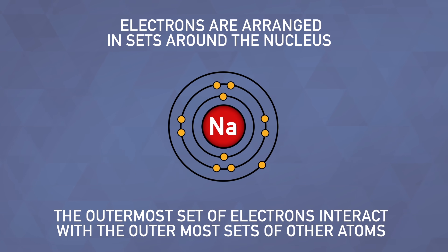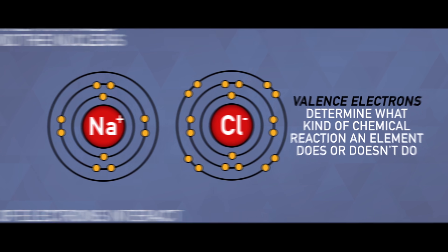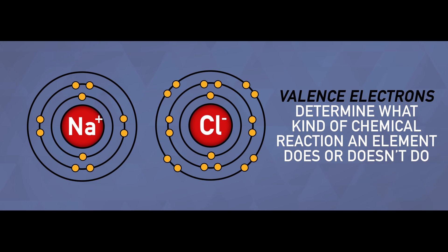Electrons within atoms are arranged in sets around the nucleus. The set of electrons that is furthest away from the nucleus is the one that interacts with the outermost sets of other atoms, and therefore mostly determines what kinds of chemical reaction that an element does or doesn't do.